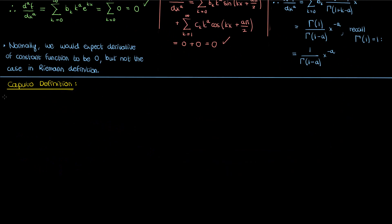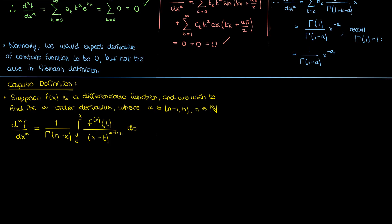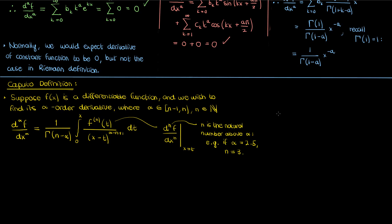Bear with me on this one because it's a bit complicated. If I have a function f of x and I want to find its fractional derivative of order alpha — an order which lies between the natural numbers n minus 1 and n, with n not included in this interval — then I can write the fractional derivative of f of order alpha as an integral where the numerator is the nth derivative of f evaluated at the dummy variable t. The value of n is key: n is the natural number above the fractional order alpha. So if alpha were 2.5 or 2.4, n would be 3. The Caputo definition allows finding a fractional derivative by taking a natural number derivative and then computing an integral involving that to get the fractional derivative.